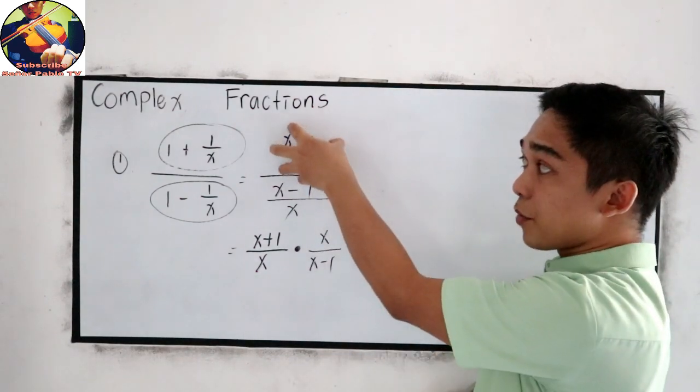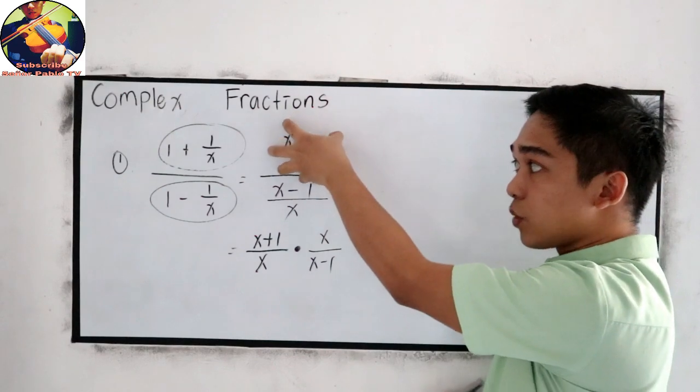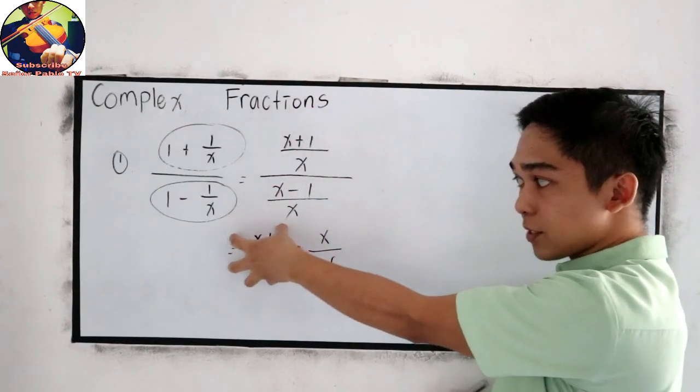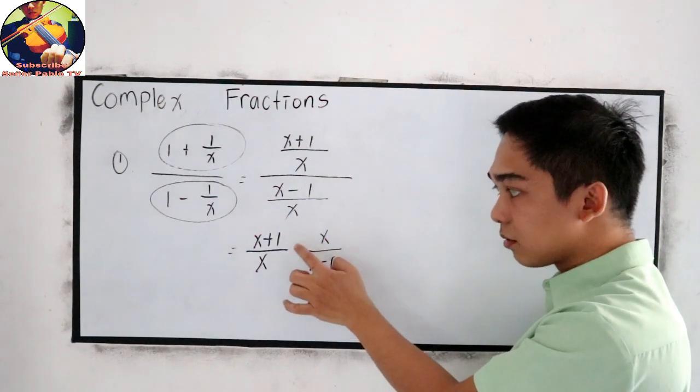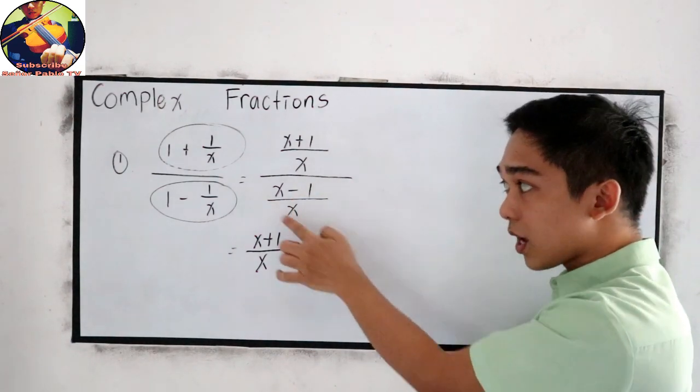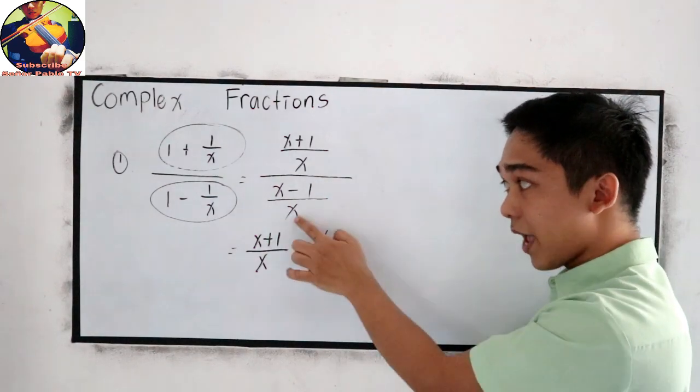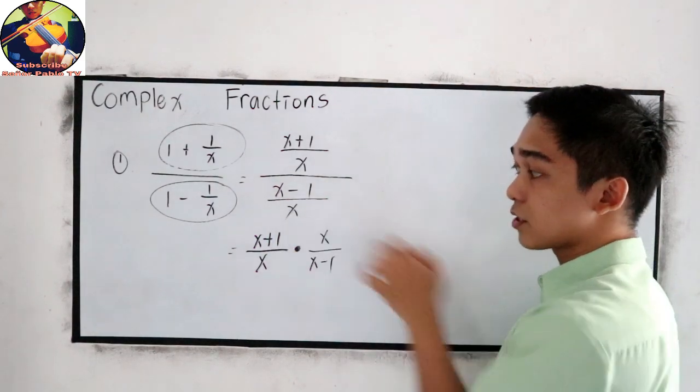x over x minus 1. Again, let us repeat. Copy our numerator, x plus 1 over x. Proceed to multiplication, then reciprocal our denominator, x over x minus 1.